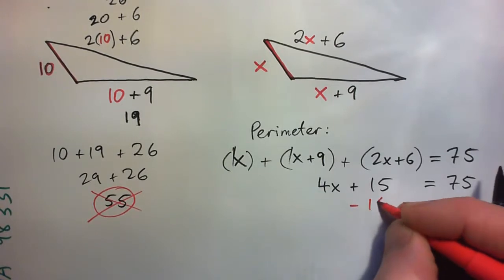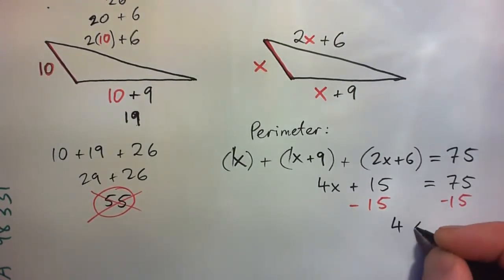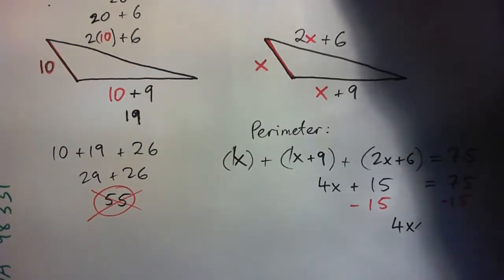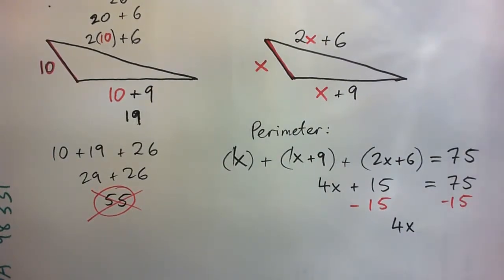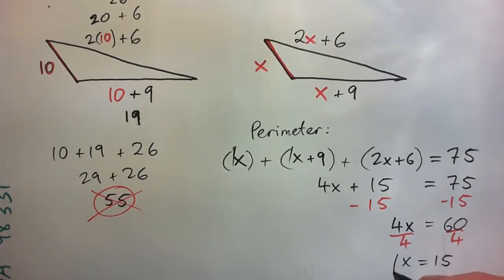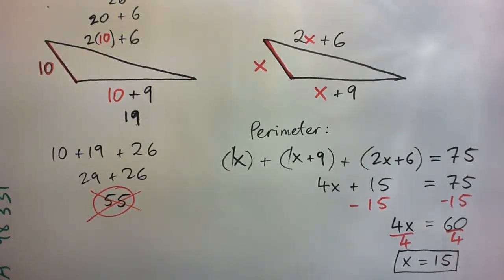And then we solve that. So we solve that equation. Press pause and solve it. See if you get the same thing as me, divide by four, X equals 15. X equals 15. What does that mean? Are we done? Is that the answer? Do we have anything else to do?